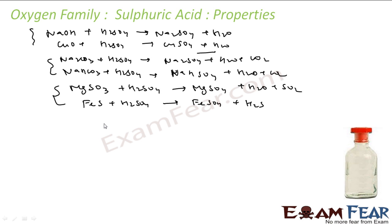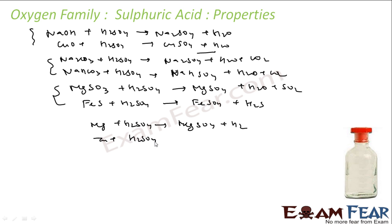Sulfuric acid also reacts with metals. Magnesium reacts with sulfuric acid to give MgSO₄ and hydrogen gas. Zinc reacts with sulfuric acid to give zinc sulfate and hydrogen. Note that dilute sulfuric acid will not react with metals that are below hydrogen in the activity series.